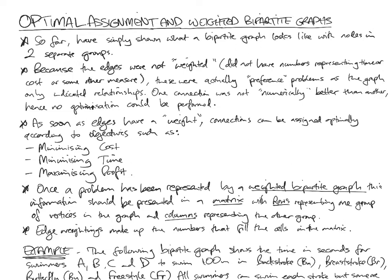So far, from previous videos, all we've shown is what bipartite graphs look like, and that is graphs with nodes in two separate groups joined together across groups. Now, because those edges were not weighted, they didn't have numbers representing time or cost or any other measures. These were actually just preference problems, as the graphs only indicate relationships with no weights on those lines. So one connection was not numerically better than any other, so you couldn't really do any optimization. But our topic is leading towards optimization of these graphs, optimization of assignment of tasks.